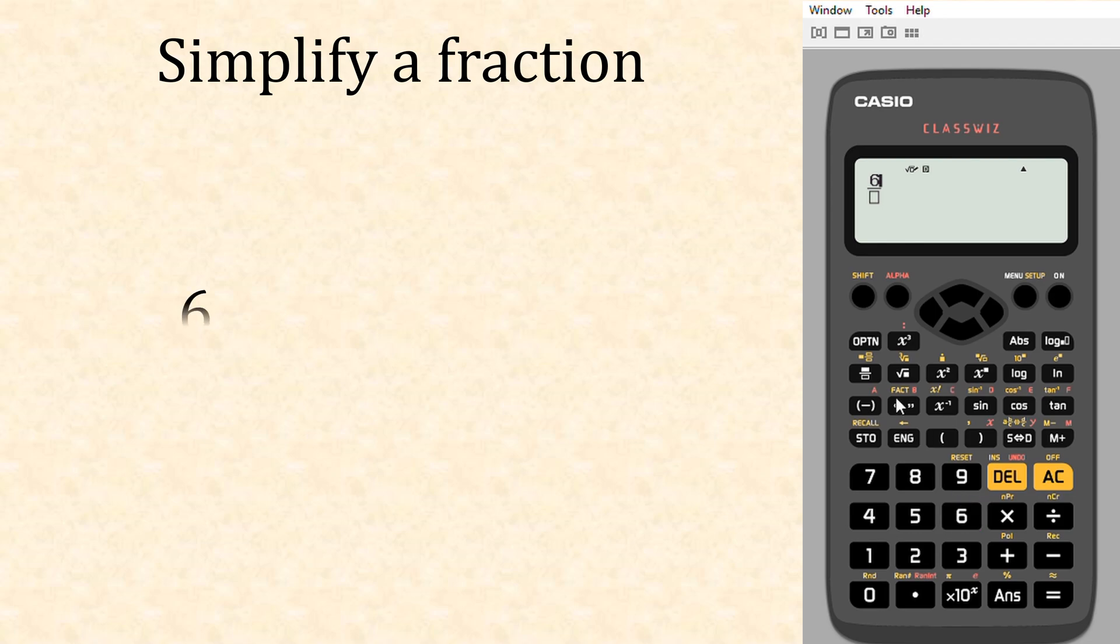An easy one. Let's have six, arrow down, and then twelve. Hopefully you know what that is—that gives us one half. Clear that. Let's try a more tricky one. Let's do 15, arrow down, 35, and give it equals. It converts it to three sevenths.